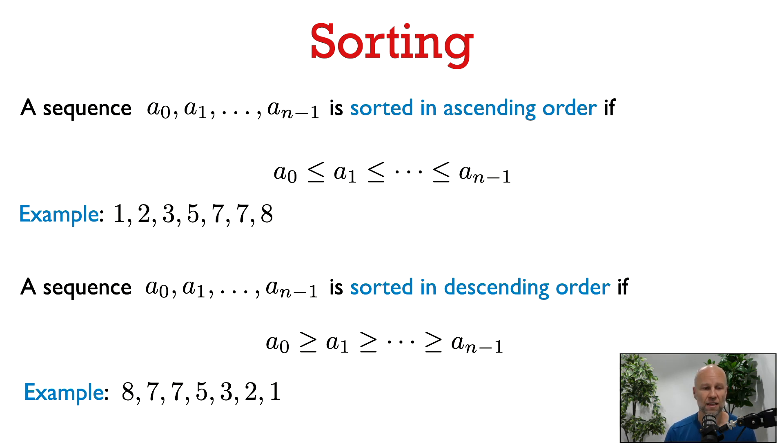A sequence is sorted in descending order if a0 is at least as large as a1, which is at least as large as a2, etc. So an example of a sequence sorted in descending order would be 8, 7, 7, 5, 3, 2, 1.